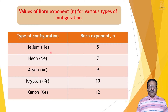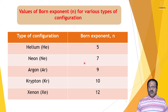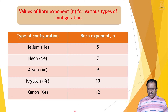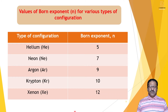For the helium configuration, the value of the Born exponent is 5. For neon, N is 7. For argon, N is 9. For krypton, N is 10. And for xenon, N is 12. So as the electronic configuration changes from helium to xenon, the value of N increases.